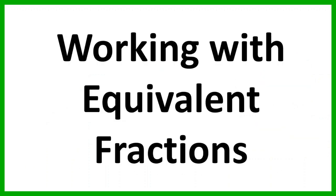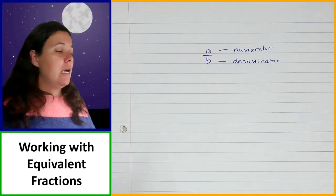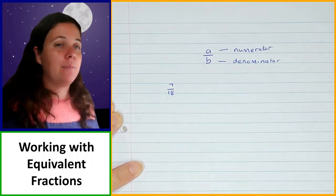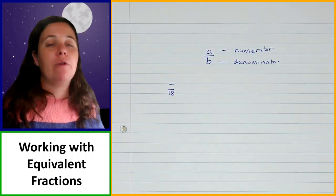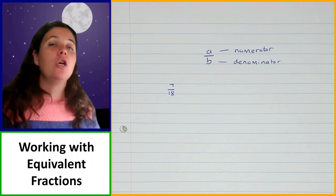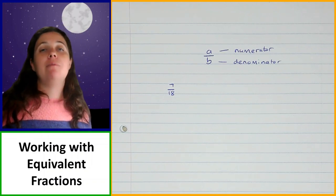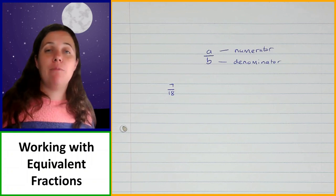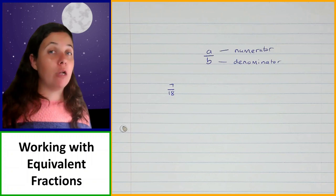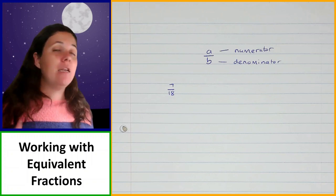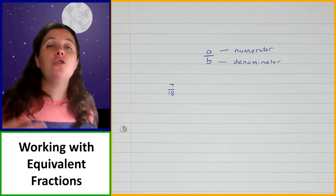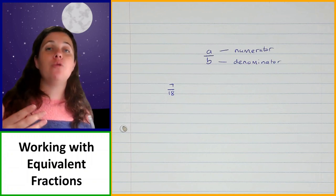Now we're going to look at working with equivalent fractions. If I take the fraction 7 over 18 — when we're working with equivalent fractions, we need to make sure that we always do the same thing to the top and the bottom of the fraction, the numerator and the denominator. As long as we do the same thing to the numerator and the denominator when we're multiplying and dividing, then the fraction will remain equivalent — it will continue meaning the same thing.